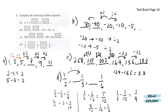For B, we have blank, blank, negative 20, negative 10, negative 5. From negative 20 to negative 10, you can see that it's divide by 2. And from negative 10 to negative 5 is also divide by 2. So if moving to the right means divide by 2, moving to the left should mean multiply by 2. So from negative 20 times 2 gives us negative 40, and times 2 again gives us negative 80.